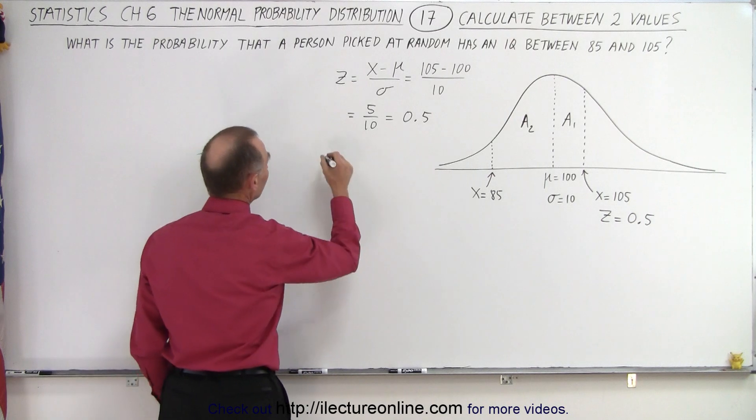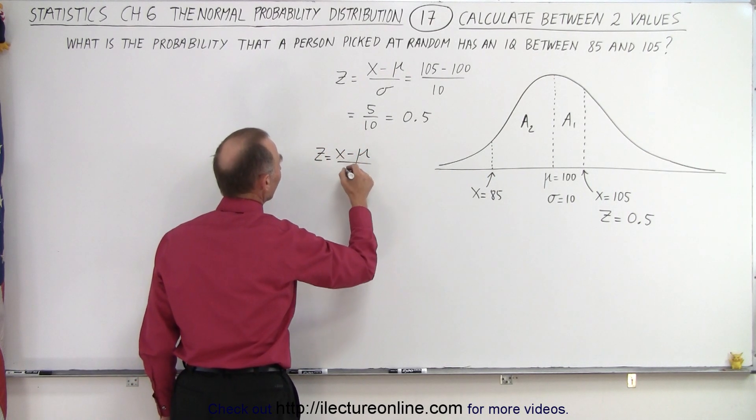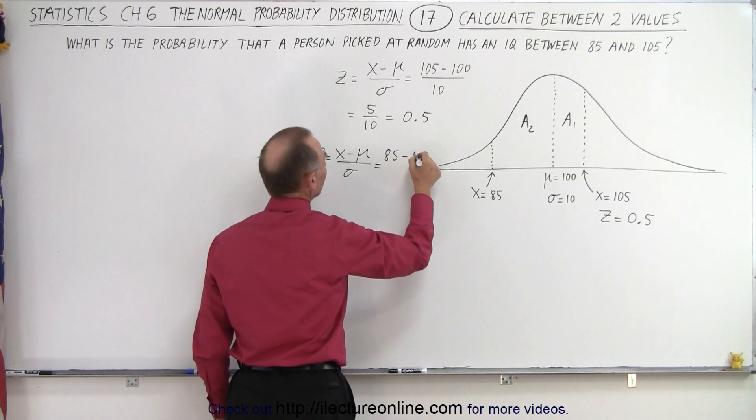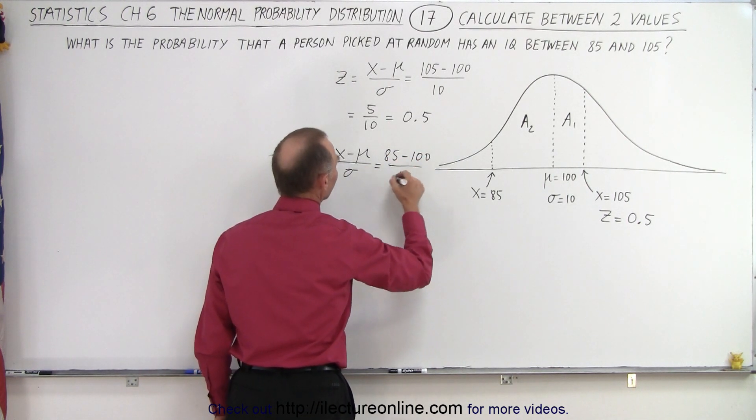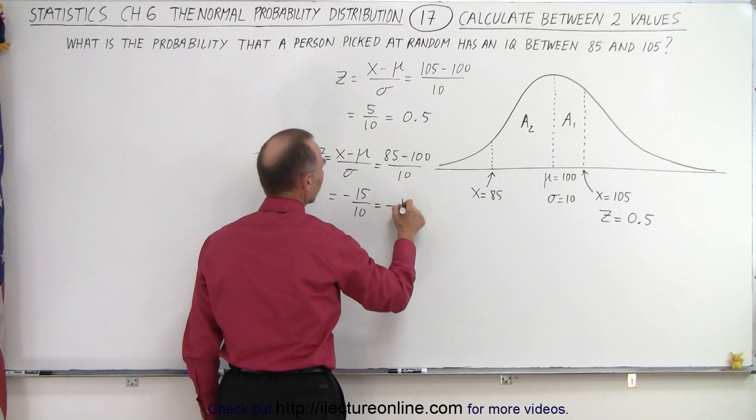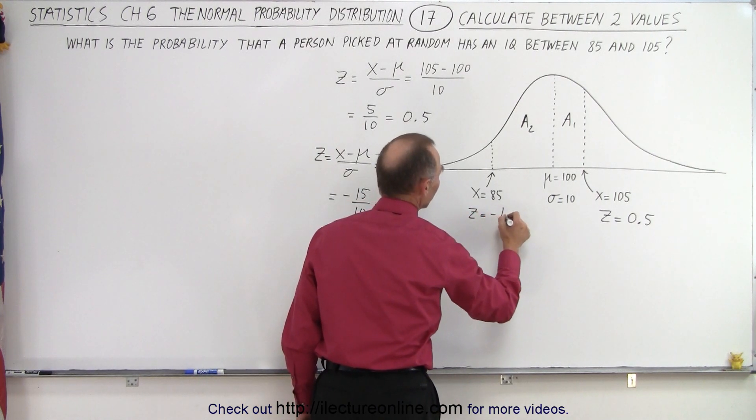And over here for the second point, we say z equals x minus the mean divided by the standard deviation. In this case it's 85 minus 100 divided by 10, which is minus 15 divided by 10, which is minus 1.5. So the z here is equal to minus 1.5.